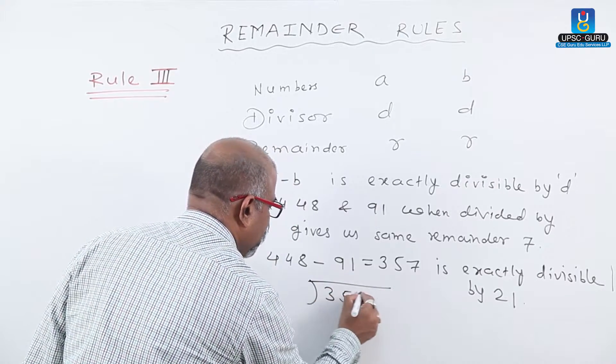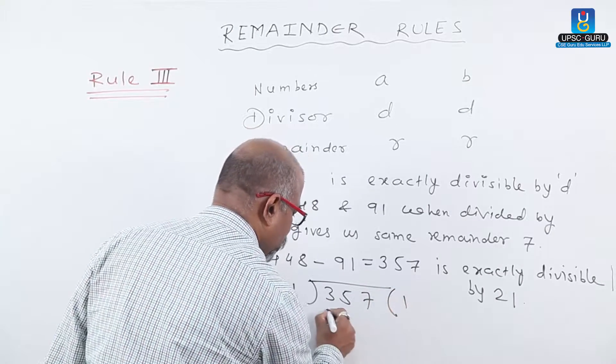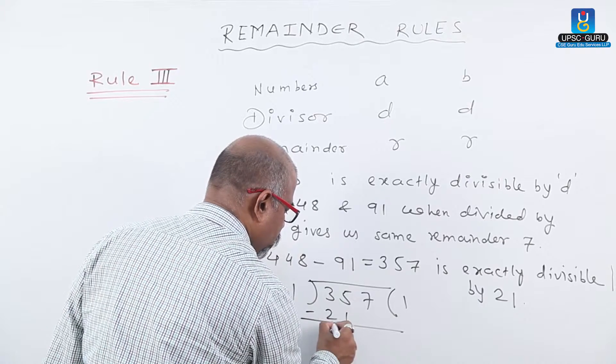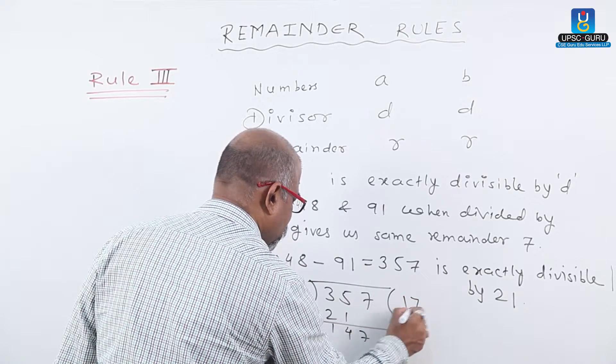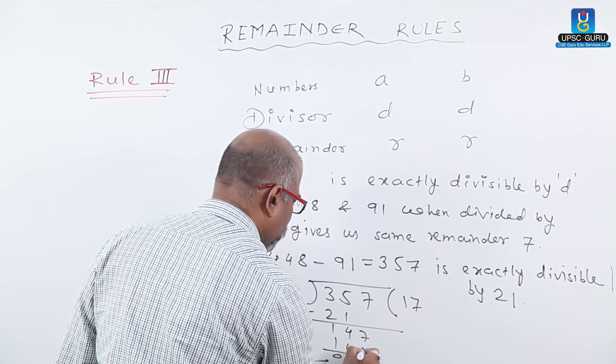Three fifty-seven divided by twenty-one, twenty-one ones are twenty-one, fourteen, twenty-one sevens are one forty-seven. Here we get a remainder.